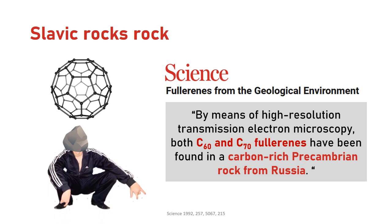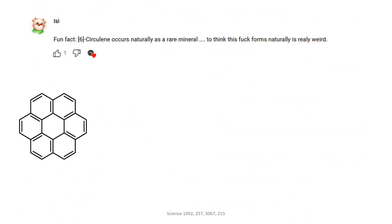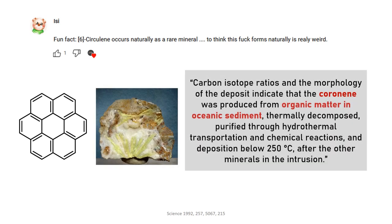As someone pointed out in a comment, there is even the naturally occurring carpathite mineral, first discovered in Ukraine but also found in California and elsewhere. It's made of exceptionally pure coronene, once part of dead fishies, another oceanic sediment, which was purified and concentrated into some random rocks. Absolutely crazy stuff.